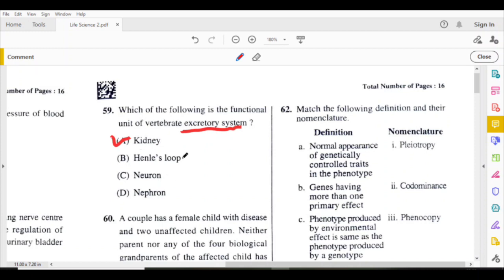I am putting kidney here because Henle's loop is also part of nephron. Nephron is part of kidney, that's why I put kidney as the answer.